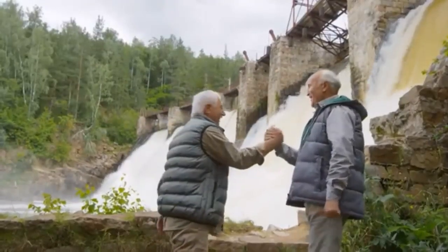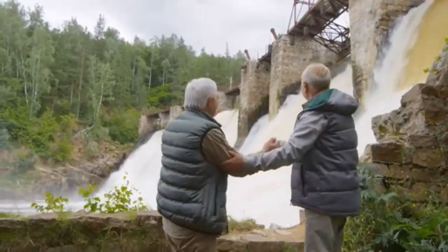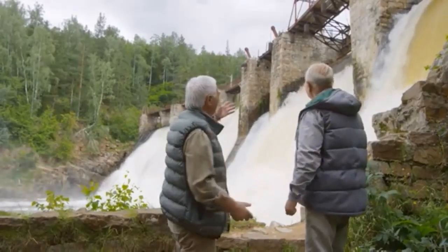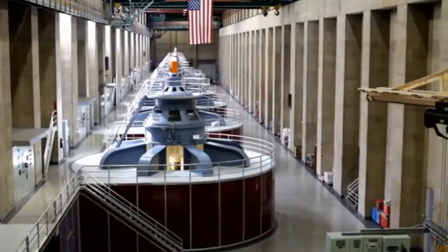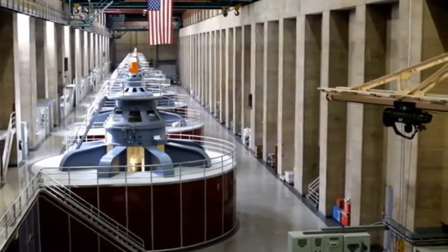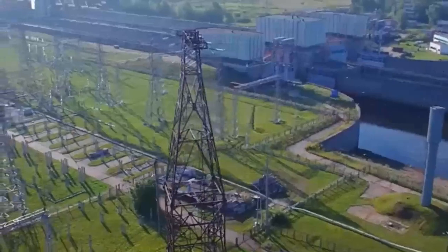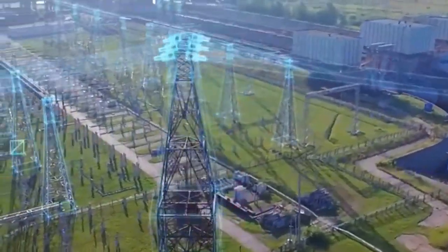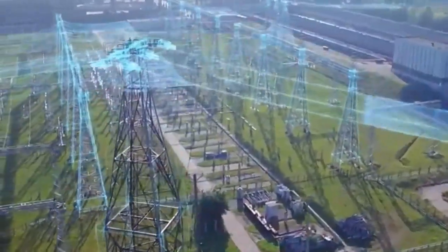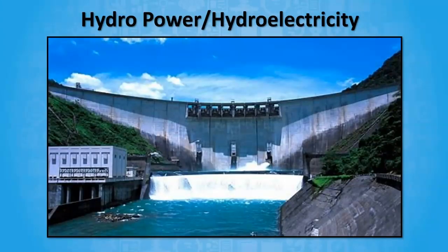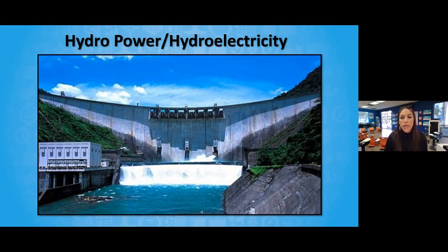Electricity produced using moving water is called hydroelectricity or hydropower. Hydroelectricity uses the kinetic energy in flowing rivers and streams. The water is often held in large dams which allow people to control the flow of water. When the water in a dam is released, it pushes past generators that convert kinetic energy into electricity. The electricity travels along power lines to power stations where it is sent along an electrical grid to our homes and cities.